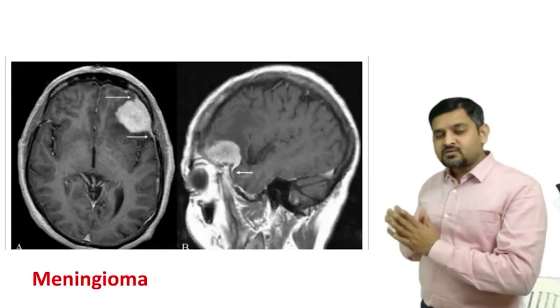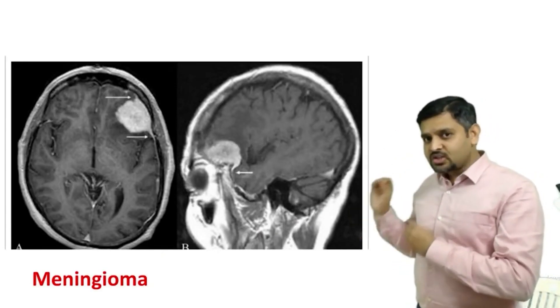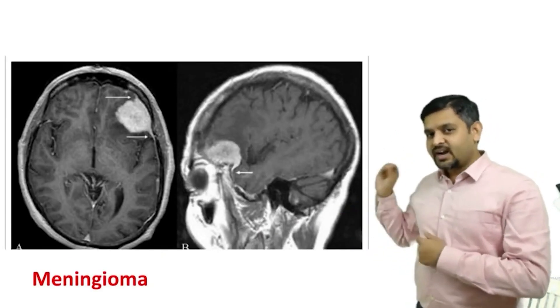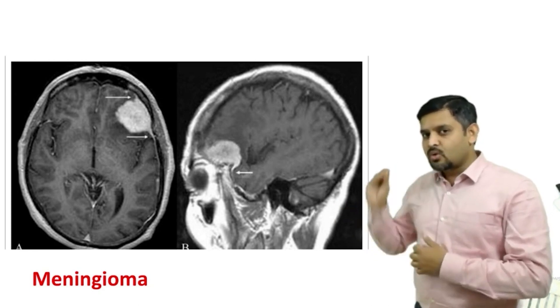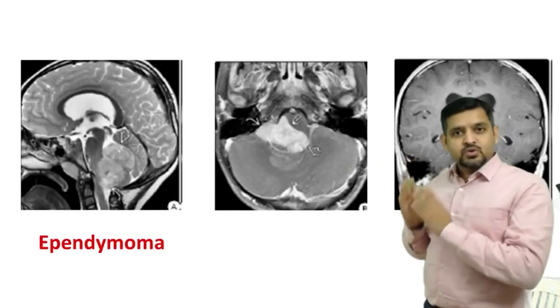If you see a mass which is dural-based and showing a dural tail sign, it is nothing but the most common brain tumour, which is meningioma.